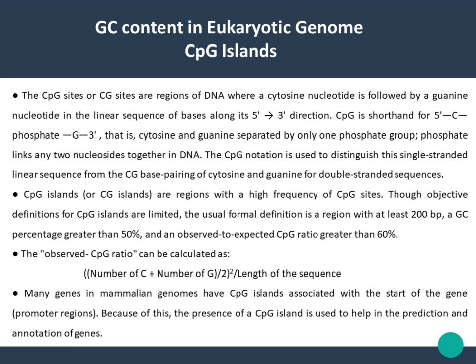CpG islands are regions with high frequency of CpG sites. The usual formal definition is a region with at least 200 base pairs, a GC percentage greater than 50%, and an observed-to-expected CpG ratio greater than 60%. The observed CpG ratio can be calculated as the number of C plus number of G, divided by two, whole squared, divided by the length of the sequence.